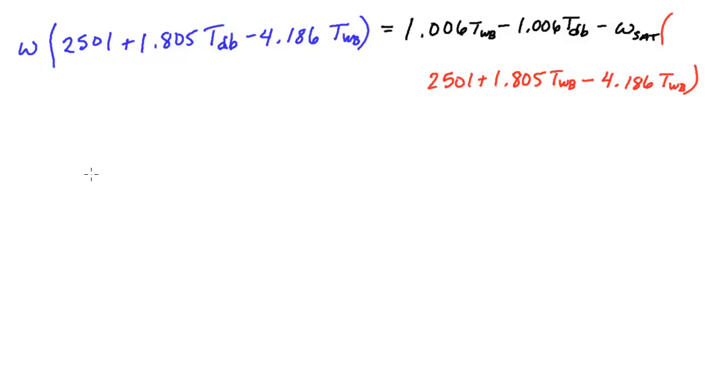So we have minus omega sat and that whole thing is multiplied by 2,501 plus 1.805 T wet bulb. Remember we had omega sat times 4.186 T wet bulb, so we have to subtract it on this side—4.186 T wet bulb. Now all we have to do is gather a few more like terms and we are in the home stretch. So we have omega saturation and that's going to be multiplied—inside of here I can take 1.805 T wet bulbs and subtract all 4.186 T wet bulbs. We'll keep the 2,501 and we're left with minus 2.381 T wet bulbs.